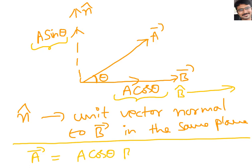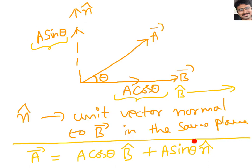So A cos theta multiplied by B cap gives A cos theta · B cap, which is now a vector. Similarly, A sin theta is a magnitude, and to make it a vector I multiply by N cap — the unit vector along that perpendicular direction. So A sin theta · N cap is also a vector. Therefore, I can write: A bar = A cos theta · B cap + A sin theta · N cap.